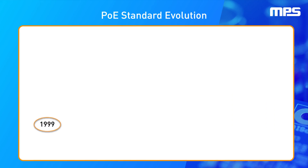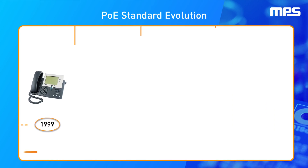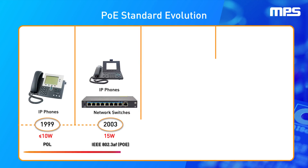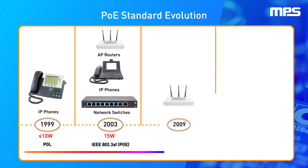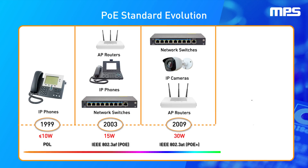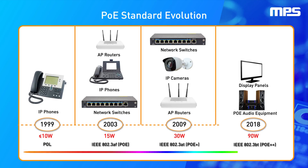In 1999, both the IEEE and the Ethernet Alliance started working to standardize PoE to ensure interoperability across a broader range of connected powered devices, or PDs, and power sourcing equipment, or PSE. The first of these standards, IEEE 802.3AF, was ratified in 2003 and specified that the power must be able to be carried by either spare pairs or data pairs.